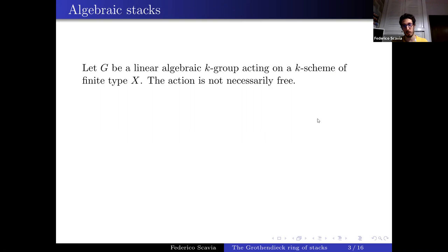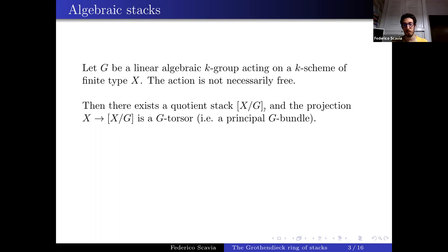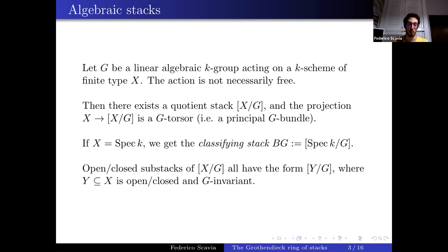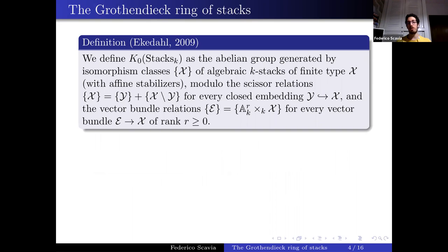Now I'll talk about the Grothendieck ring of stacks. We look at algebraic stacks, and essentially only quotient stacks. If G is a linear algebraic group acting on a scheme of finite type X, there's a quotient stack [X/G], and the projection is always a G-torsor. When X is just a point we get the classifying stack BG. The open and closed substacks of such a quotient stack all have the form [Y/G] where Y is a G-invariant open or closed subscheme of X.